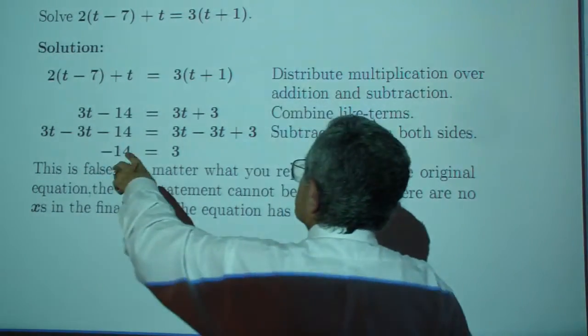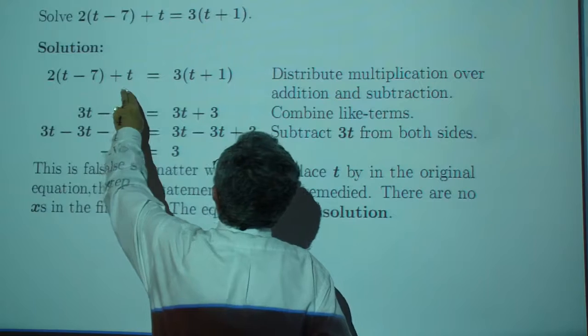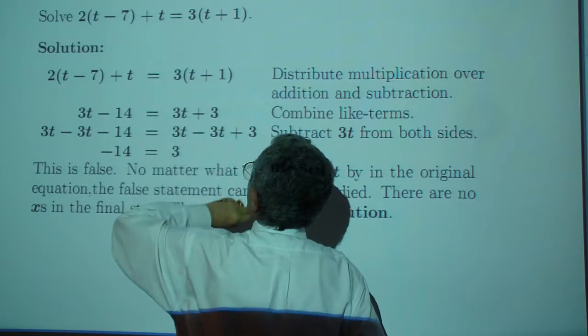Example 5. Solve 2 times t minus 7 plus t, which is 3 times the quantity t plus 1.